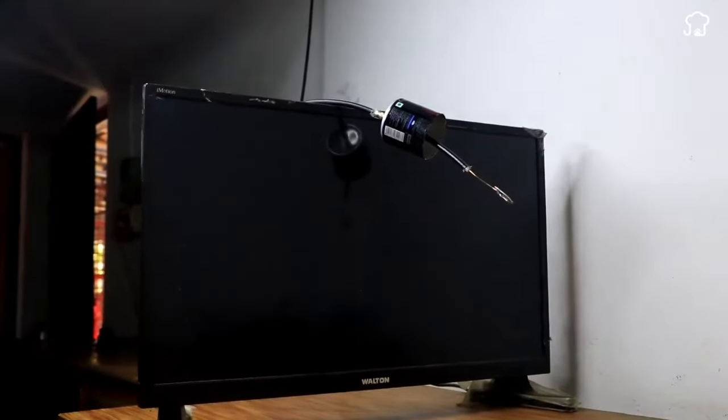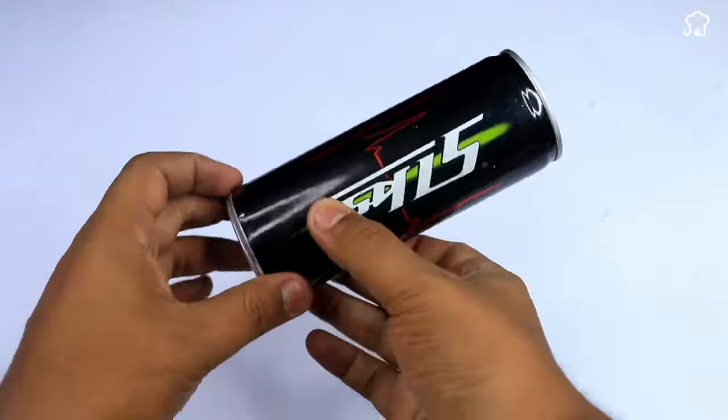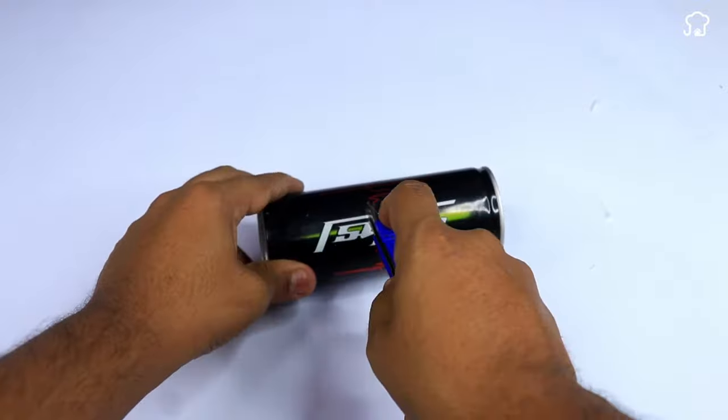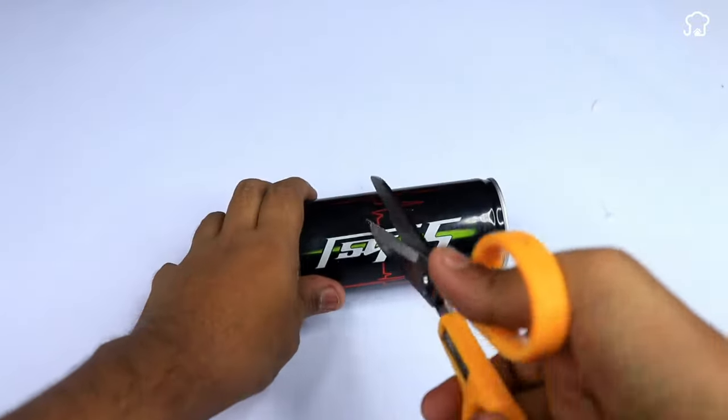Telecable companies don't want you to find out about this. To begin, we will take an aluminum can, and with a cutter and scissors, we will cut it in half.